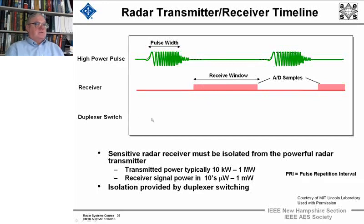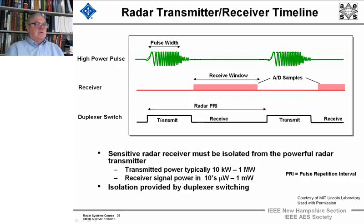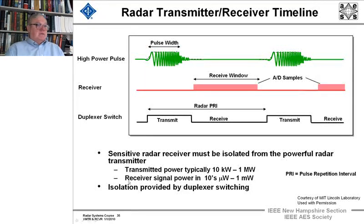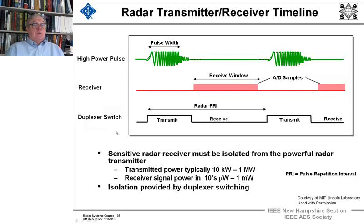We have the duplexer switch — the TR switch — which turns the transmitter on for sending out the pulse, and then turns the receiver on and the transmitter off, and then vice versa. One of these cycles is called the radar's pulse repetition interval. The sensitive radar receiver has to be isolated from that powerful radar signal. Transmitted power is typically 10 kilowatts to a megawatt, and the received signal's power is in the tens of microwatts to a milliwatt, so isolation has to be supplied by that duplexer switching.